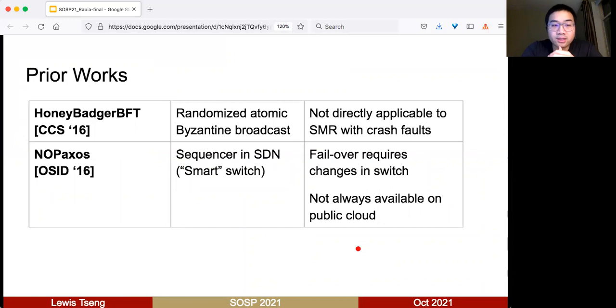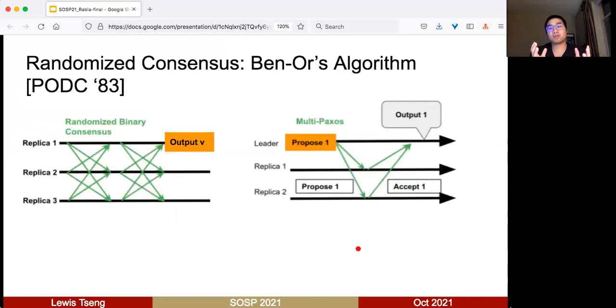Prior works tried to address this. HoneyBadger shared the same vision with us—using randomized approaches to make SMR fault tolerance easier. Unfortunately, it was designed for Byzantine cases, so it's not clear how to apply the same idea in our case with crash failures where we focus on performance. There's also a very cool paper called NOPaxos. The idea is to push the heavy work of ordering requests to the hardware to build a sequencer. The logic can be simplified and performance is great, but unfortunately the failover requires changes in the switch, and in our experience, this kind of switch is not always available on public cloud.